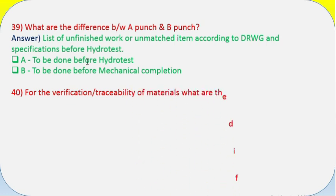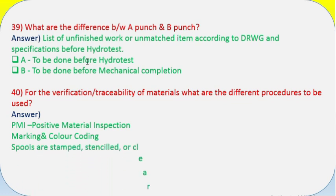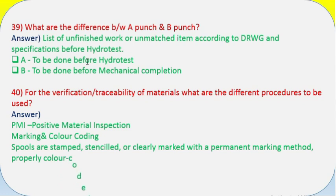Question 40: For the verification/traceability of materials, what are the different procedures to be used? Answer: PMI - Positive Material Inspection. Marking and color coding. Spools are stamped, stenciled, or clearly marked with a permanent marking method. Properly color coded and uniquely identified, labeled and traceable to isometric drawings.